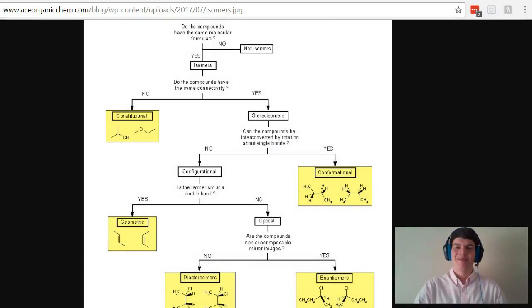I really like thinking about isomers in terms of this diagram. You can start out at the very top and ask yourself the questions as you move down. To start off with, you're going to ask yourself is this even an isomer in the first place? And the way you know that is if the molecules have the same molecular formula. If they have the same molecular formula, then they are isomers.